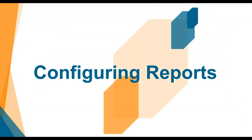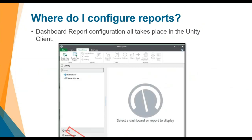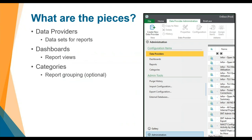Now that we know what we want to measure, let's configure a report. To configure dashboard reports, log into the Unity client and select the dashboards button in the ribbon. From there, go to the administration tab in the dashboards menu. Each report consists of one dashboard view, at least one data provider, and an optional category. Data providers provide the data to the dashboard — we will go over the possible providers next. Dashboards are the visual representation, and categories group reports into a Windows folder-like structure.